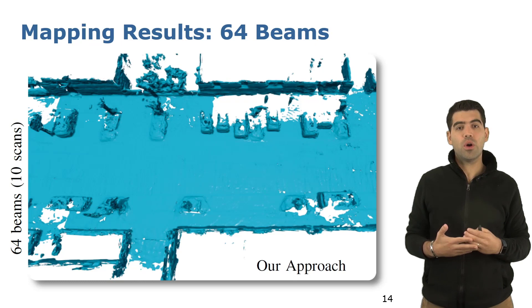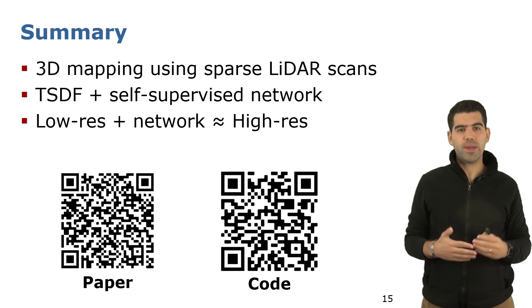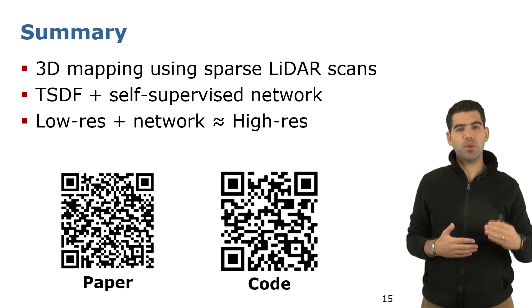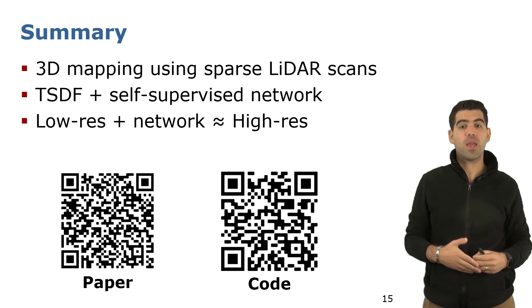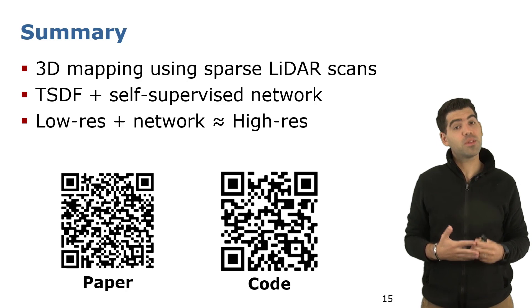In summary, we propose a 3D mapping system using low-resolution LiDAR sensors. Our approach combines a traditional mapping system based on TSDF and a completion network that aids the 3D reconstruction of the TSDF system. In our work, we show how we can combine a low-resolution sensor with a completion network to obtain similar results as those obtained with high-resolution ones, or sometimes even better.